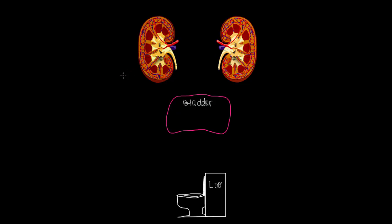Next time you're with a group of friends and you have to go pee, be a little fancy. Stand up and announce to them that 'I must now undergo micturition.' Micturition is a fancy phrase for to pee or to urinate. In this video, we're going to talk about the process of micturition.